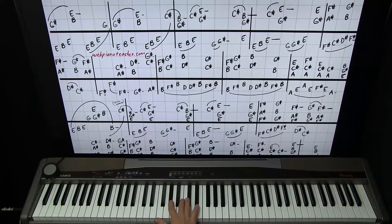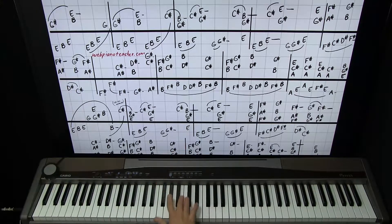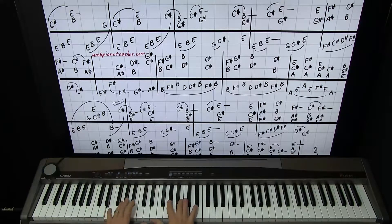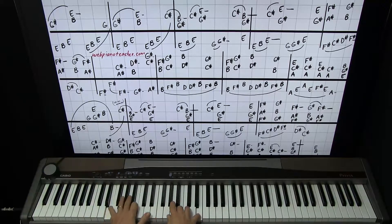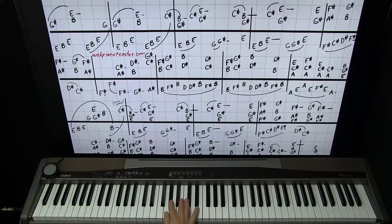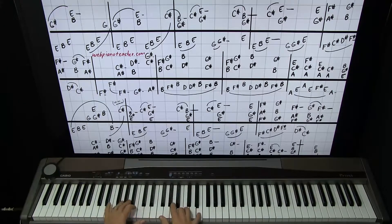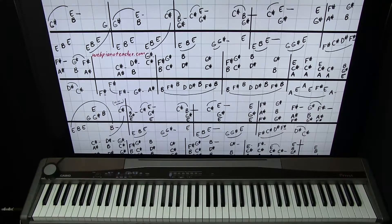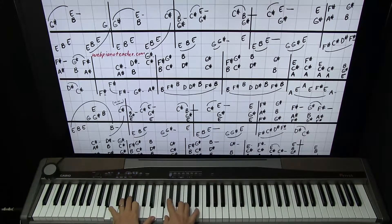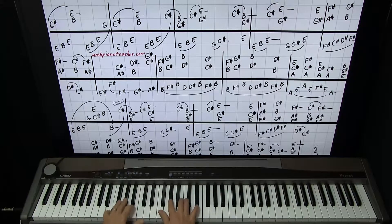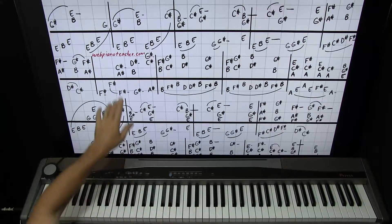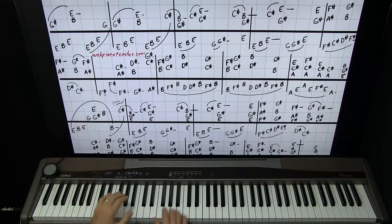The right hand is going to have G sharp. I'm going to use my two finger on that. Then I can do B and E with three and five. So we have one and two and three and four. And that G natural there is just kind of a bluesy thing, which leads us back into the G sharp on the next measure. So it's one and two and three and four and. Let's do it again.